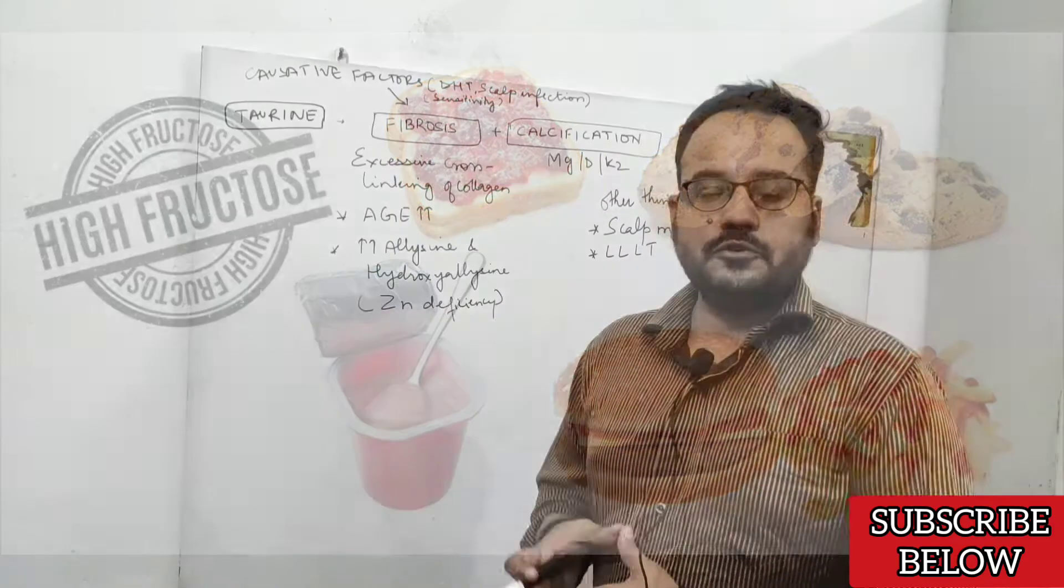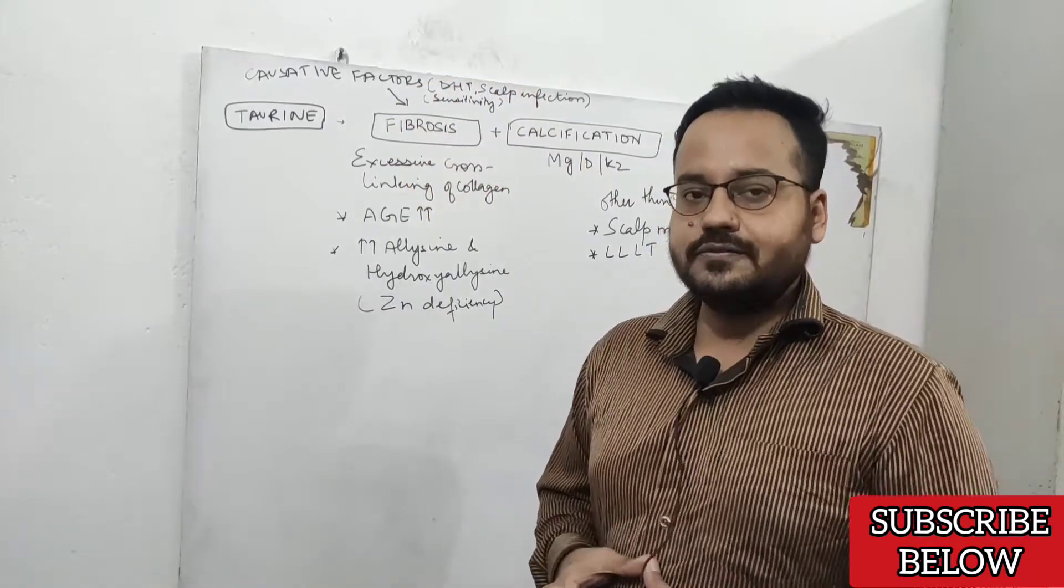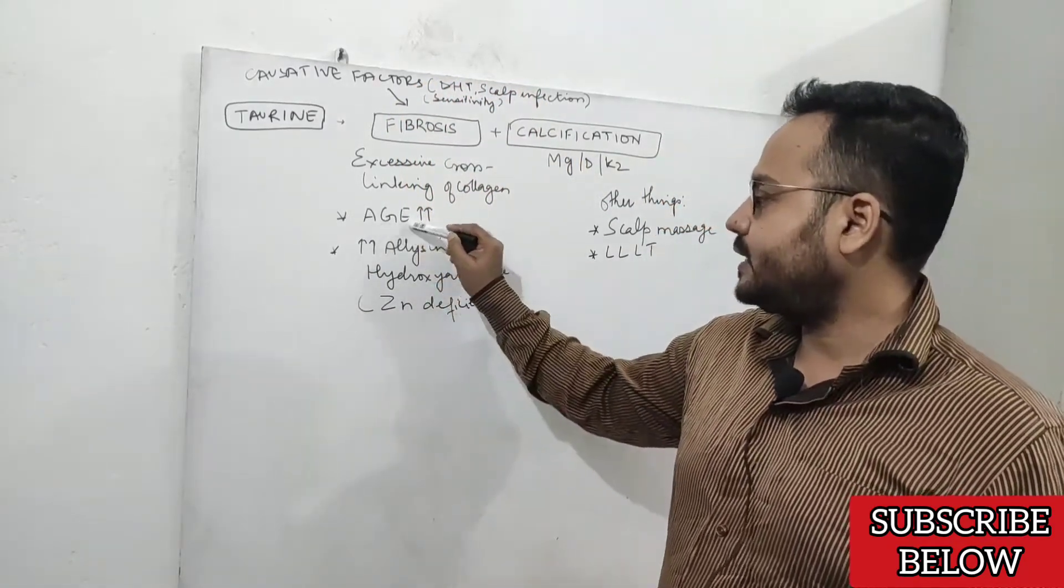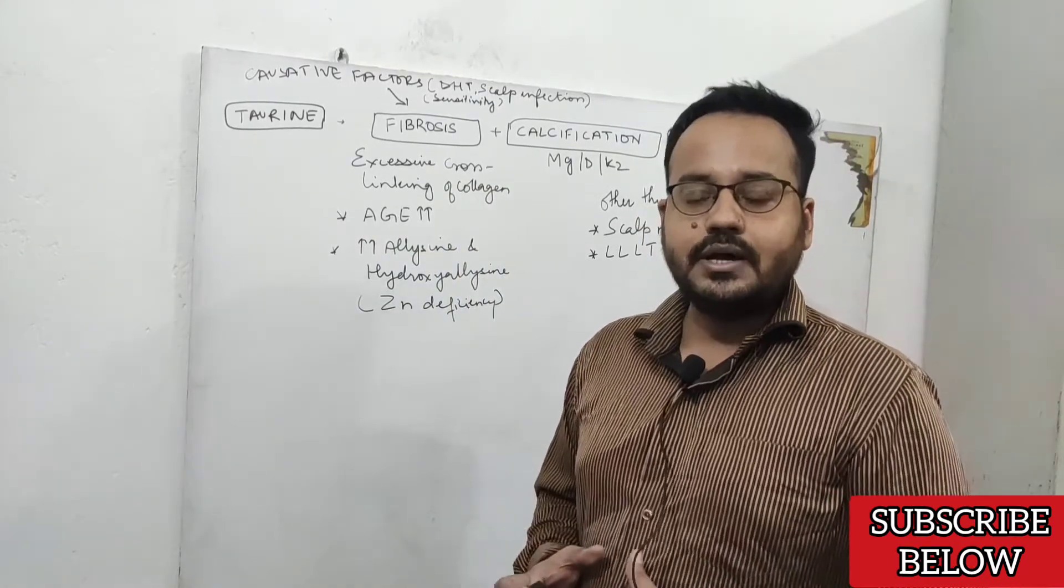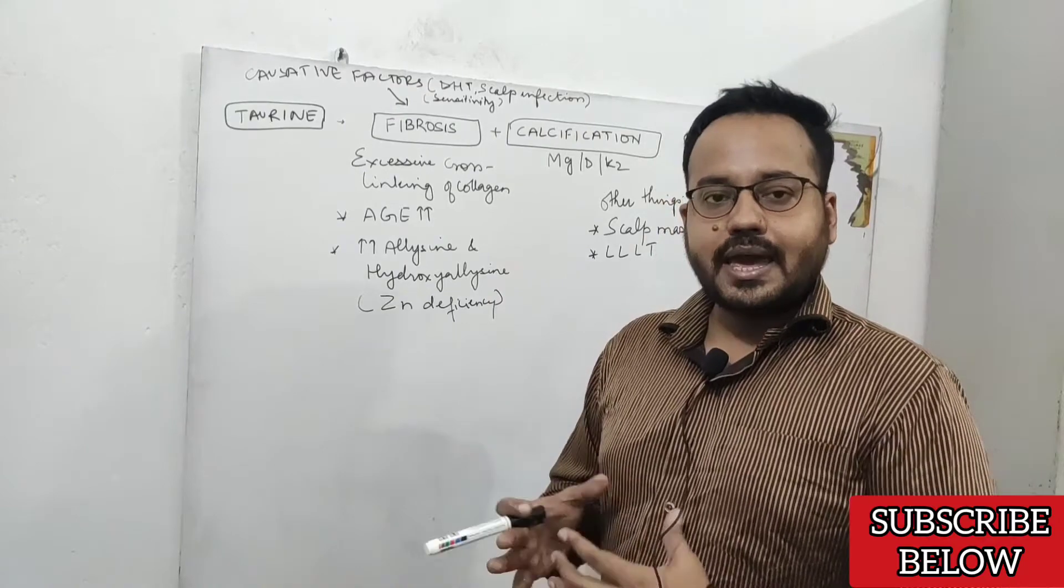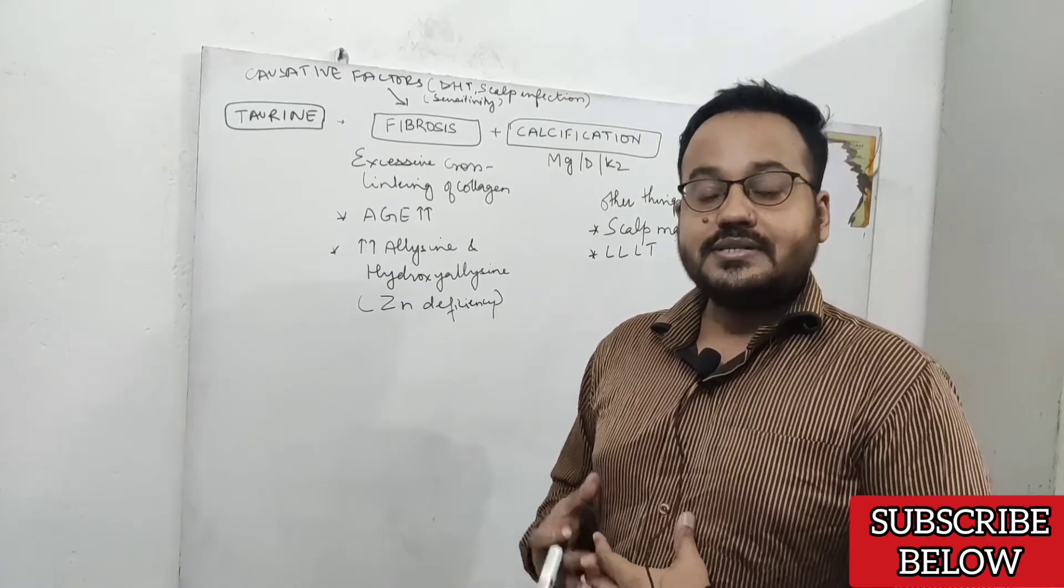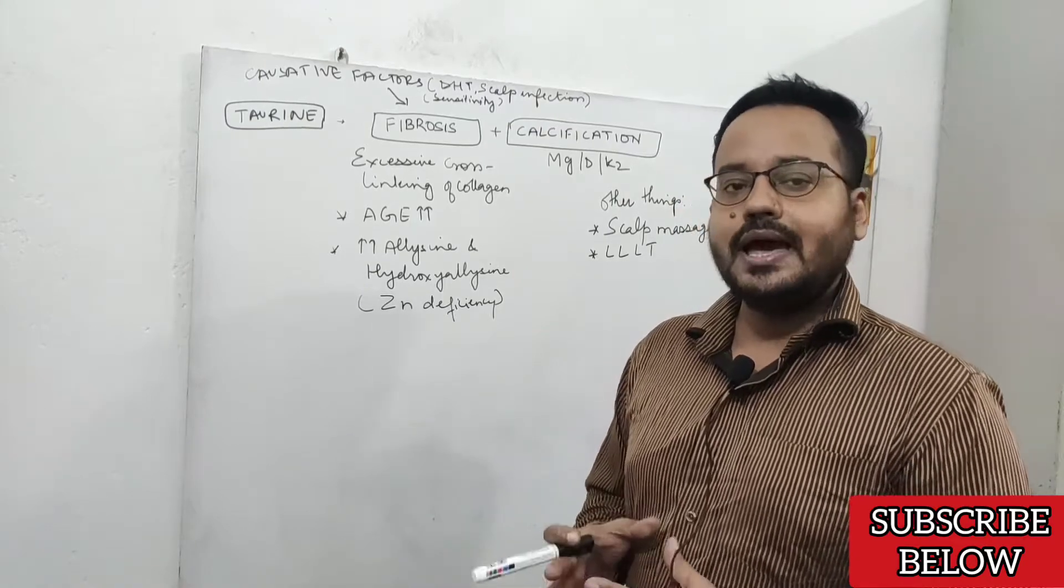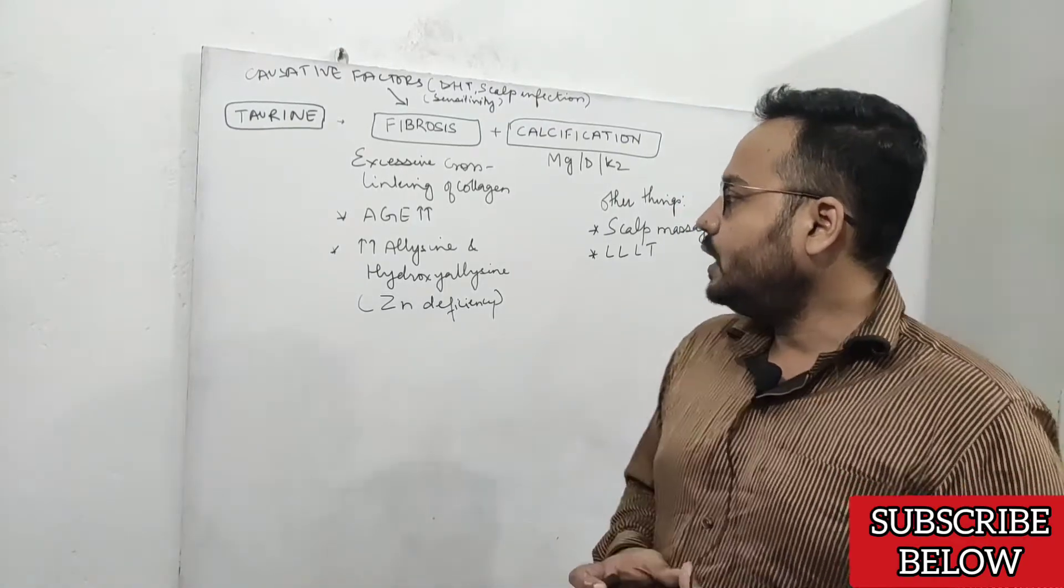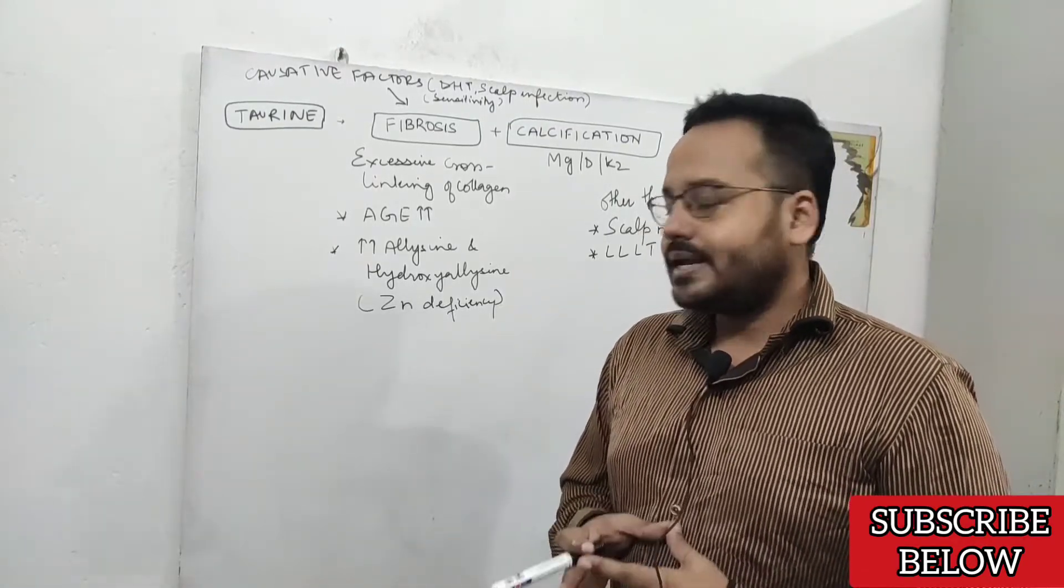You want to avoid high fructose corn syrup as well as overcooked food and deep fried foods in order to decrease advanced glycation end products, because this will result in fibrosis, especially if you have high DHT in your scalp and are sensitive to DHT. If you have a familial history of androgenic alopecia, it's very important that you improve insulin sensitivity.